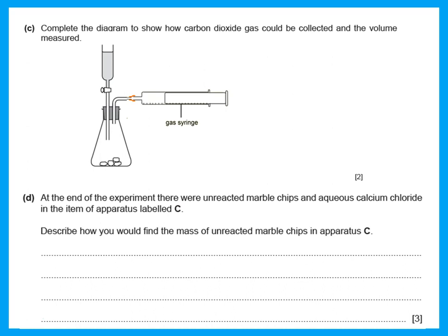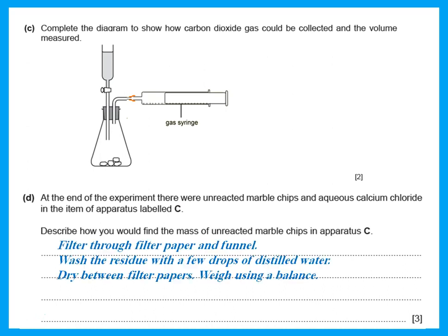Describe how you would find the mass of unreacted marble chips. The marble chips do not dissolve in water, so you filter through filter paper and funnel to get the unreacted marble chips as residue. Then wash the residue with a few drops of distilled water, dry between filter papers, and weigh using a balance.